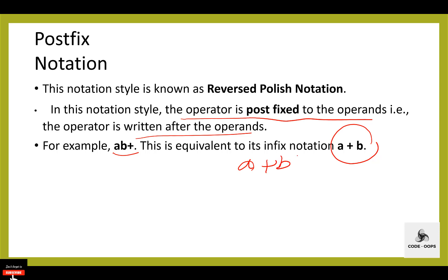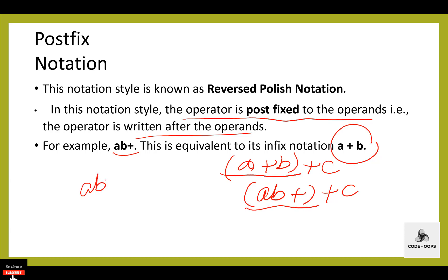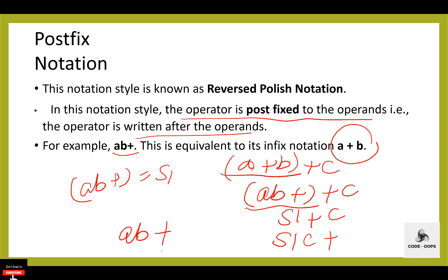For example, we have an infix notation a plus b plus c. To convert this infix to postfix: first, convert a plus b into postfix, giving ab plus, then plus c. Assume ab plus is equivalent to s1, so we have s1 plus c. Convert s1 plus c into postfix. Substituting s1 with ab plus, the result is ab plus c plus, which is the postfix notation of a plus b plus c.